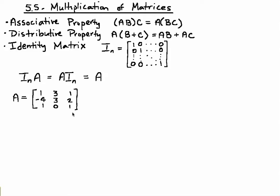So we'll start out with matrix A and we will need to multiply it by our identity matrix. Matrix A is a 3 by 3, so our identity matrix will also need to be 3 by 3.